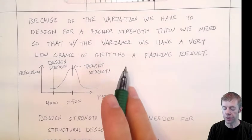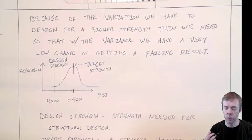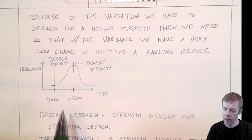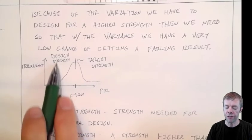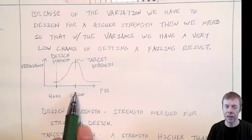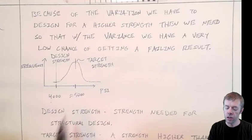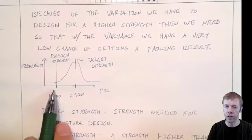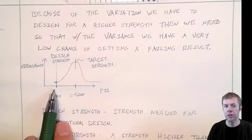Because of this variation we have to design for a higher strength. We need a safety factor that helps us make sure that we don't run into actual trouble. This graph shows exactly how we handle this. If we want to provide 4,000 psi concrete then we're going to slide our mean, slide our target strength over enough so that the probability is very low. ACI shoots for one percent chance that we could have something actually not be the strength that we want it to.